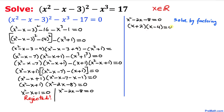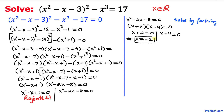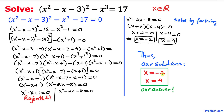Separating the factors: x plus 2 equal to 0 gives x equal to negative 2 as our first solution, and x minus 4 equal to 0 gives x equal to positive 4 as our second solution.